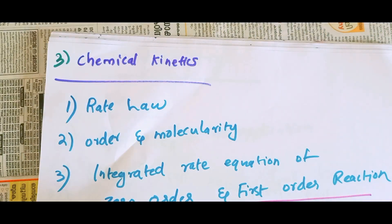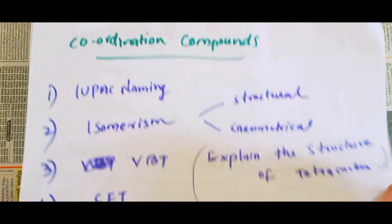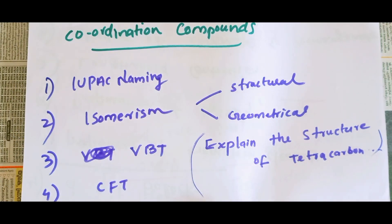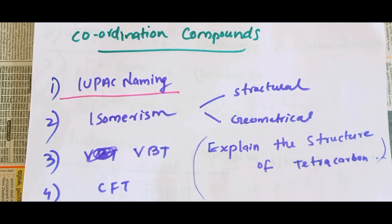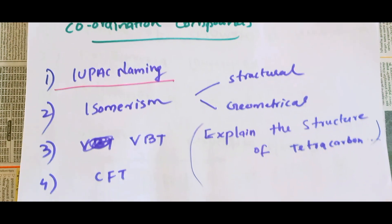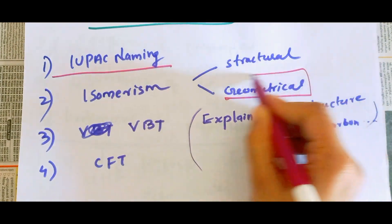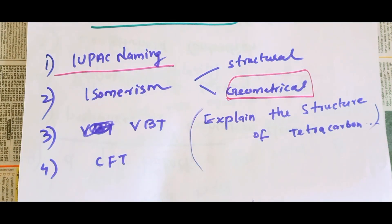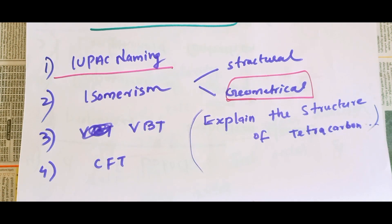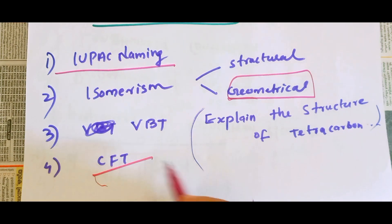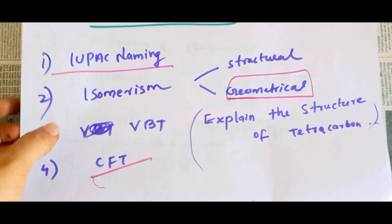If you're reading a few questions, you should focus on the questions. You should read the IUPAC naming for coordination compounds. In my group, I will cover isomerism: structural isomerism, geometrical isomerism, VBT theory, and the explanation of crystal field splitting — octahedral and tetrahedral splitting.